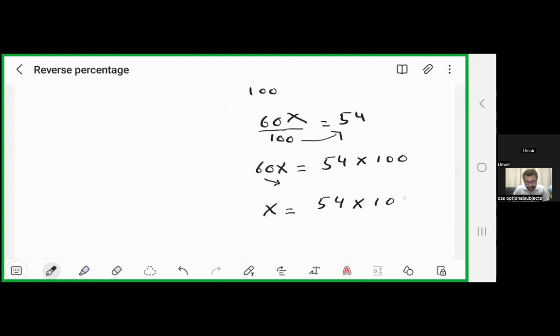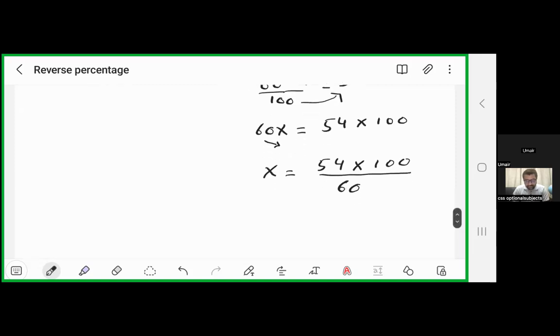And this 60 will be dividing 54 and 100. So let us simplify this one: 0 and 0 can be simplified, 6 one times 6, 6, 9 times 54.